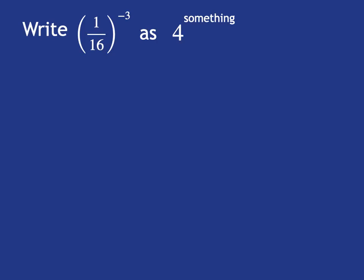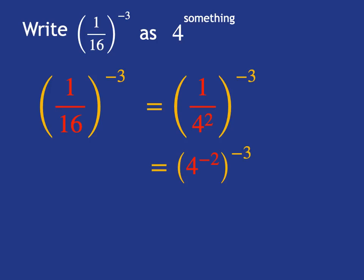They could just as well have asked us to rewrite it as 4 to the power of something, and our process will be very similar. We'll recognize 16 as 4 squared. We then recognize we can write 4 squared as 4 to the minus 2, and then we apply our exponent rule, and we'll get 4 to the power of 6.